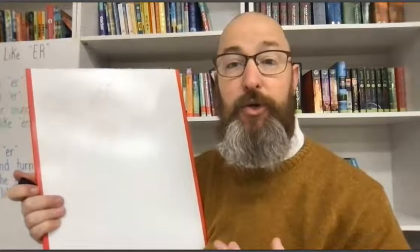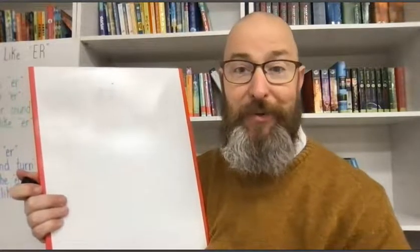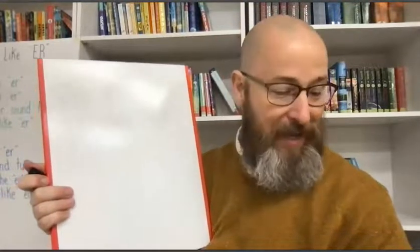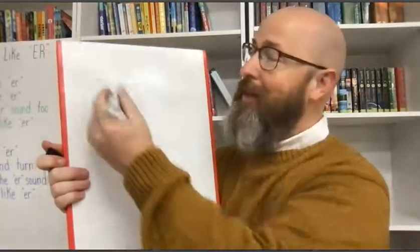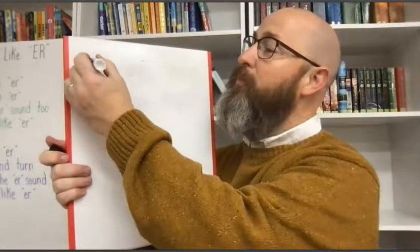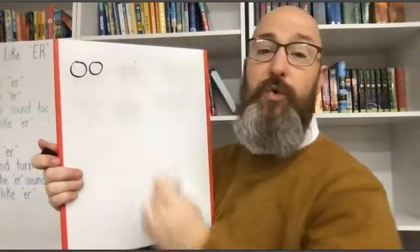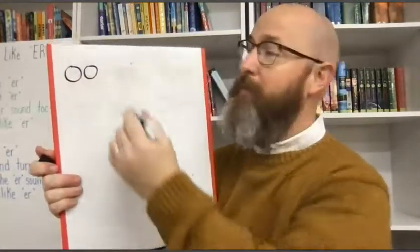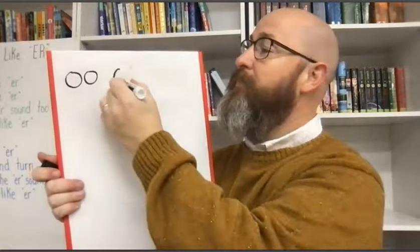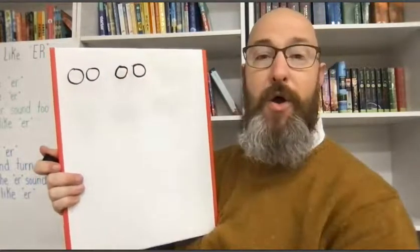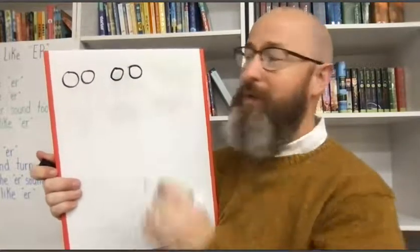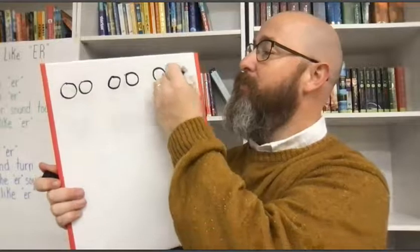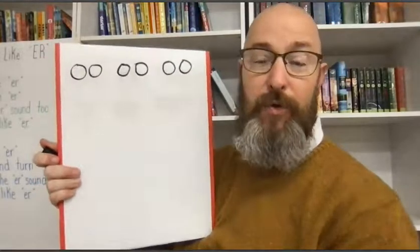We're going to write them three times each. And remember, every time we write them, we make the OO sound. All right, are you ready? Let's start with OO — OO, OO, OO.